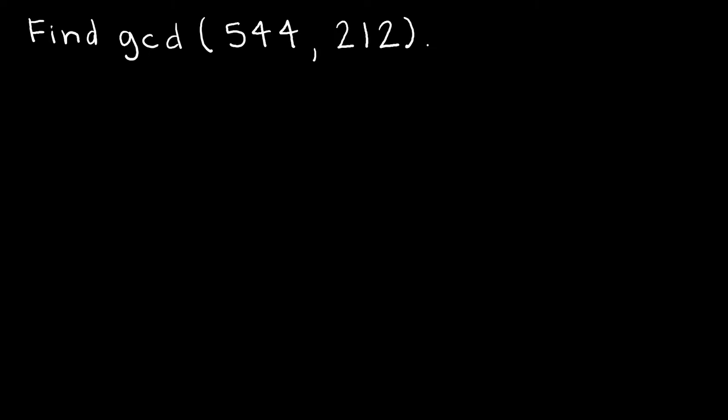So I'm trying to find the greatest common divisor of 544 and 212. And when I do this, I'm going to start with the value that is greatest. And I'm going to say 544 is equal to 212 times something plus something.